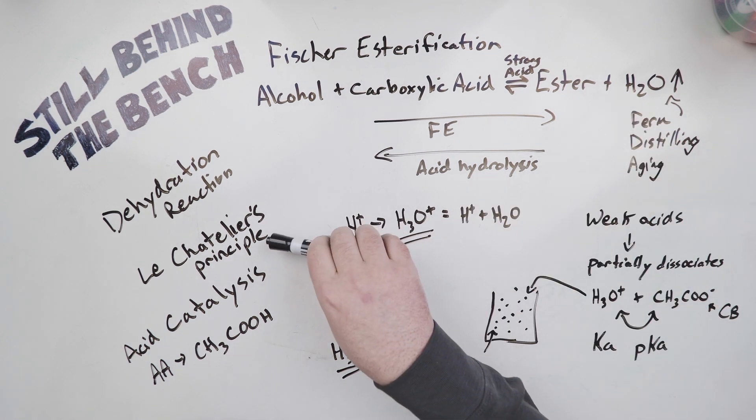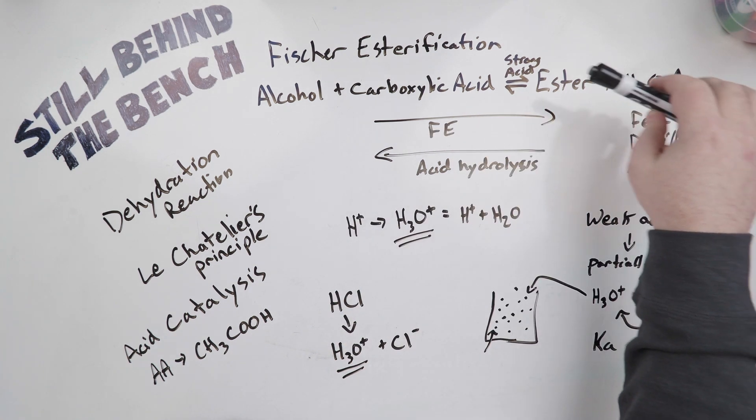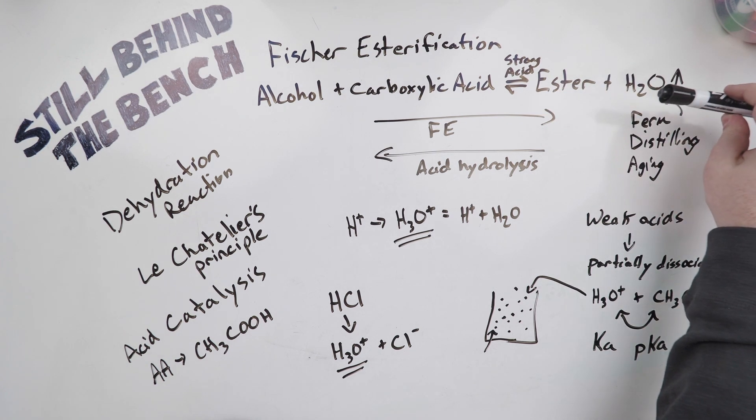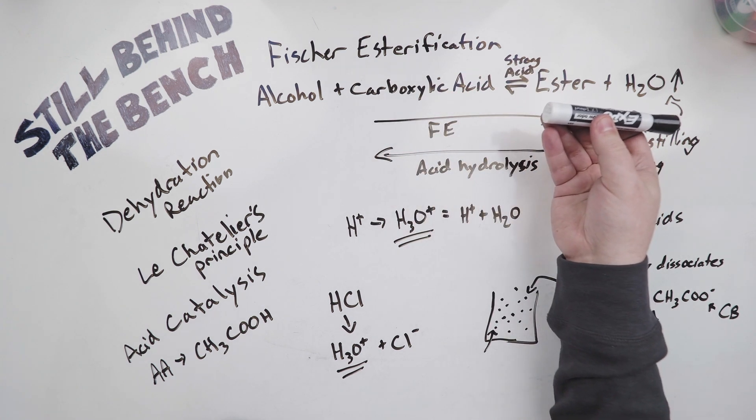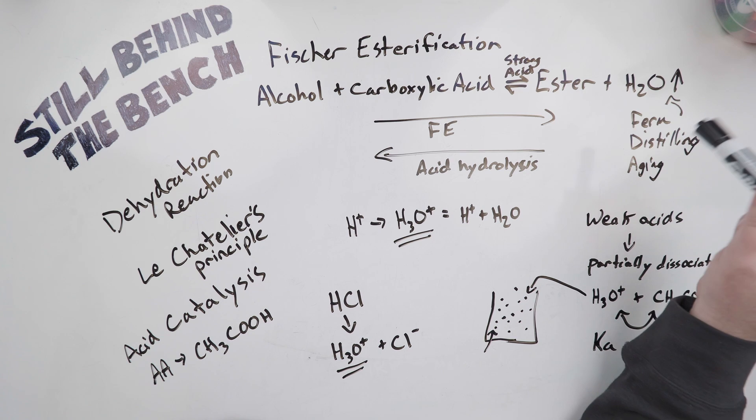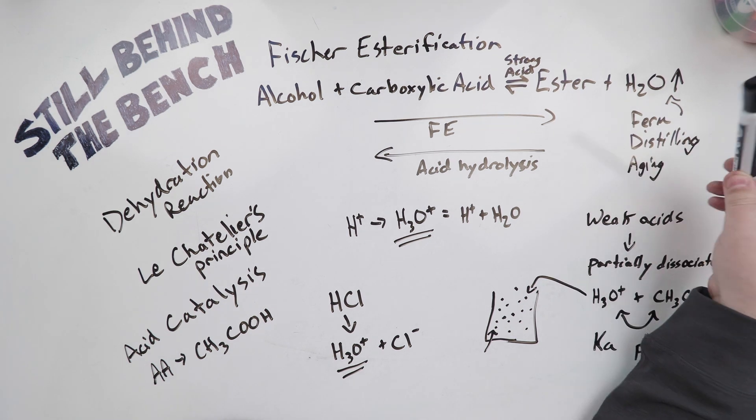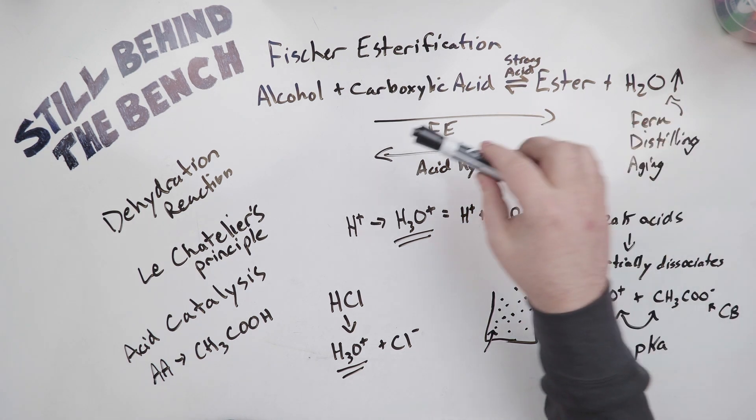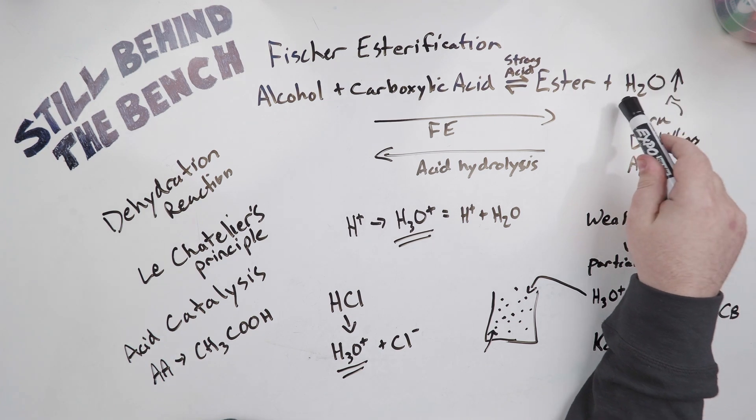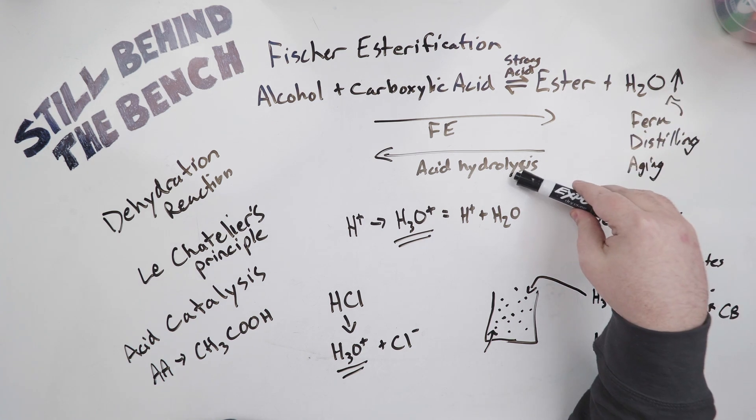But Le Chatelier's principle tells us that if you have an abundance of one of the products, it will cause the reaction to shift more towards the left. So if you have more ester or more water, this reaction will act more like an acid hydrolysis than Fischer esterification. And essentially every case we deal with - fermentation, distilling, and aging - we are dealing with huge amounts of water. So we're going to see negligible quantities of esters being produced via Fischer esterification because the water will be at best acting like an inhibitor and at worst promoting acid hydrolysis.